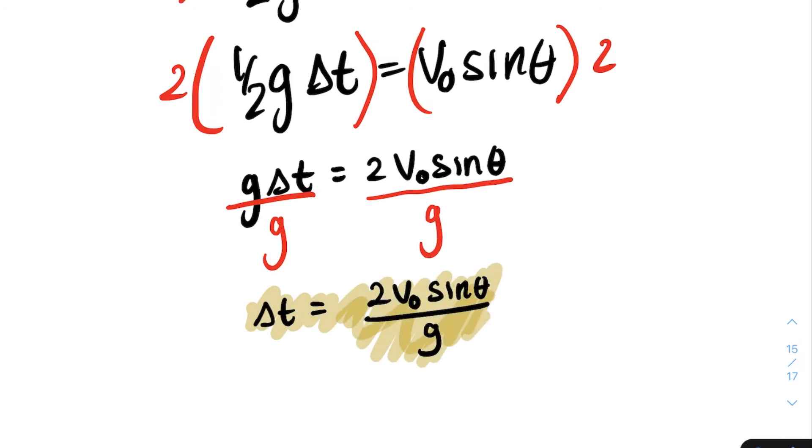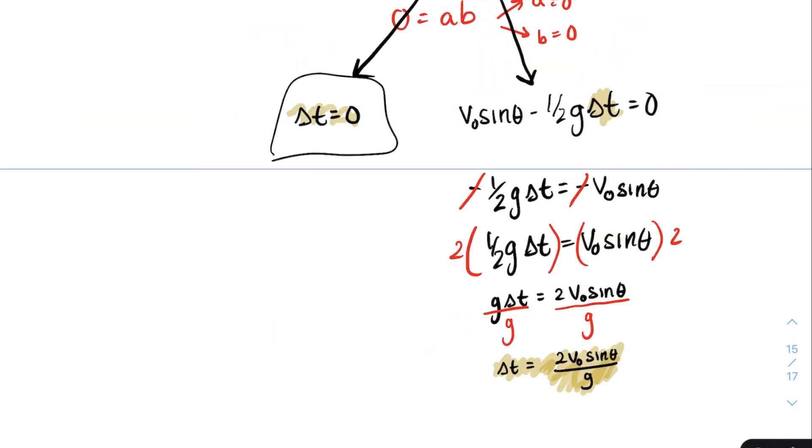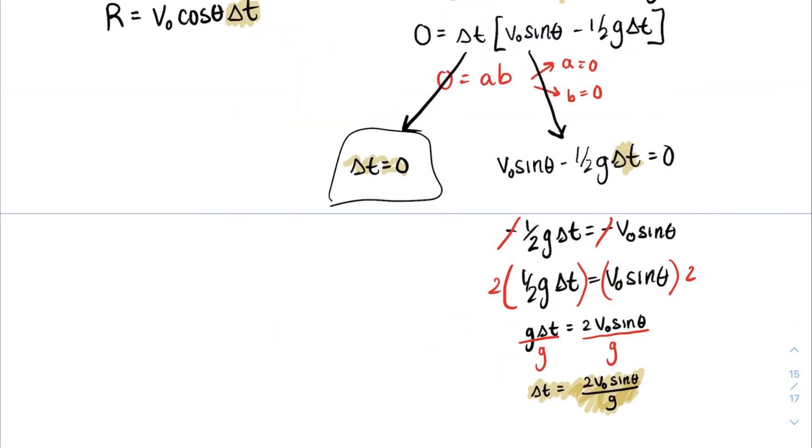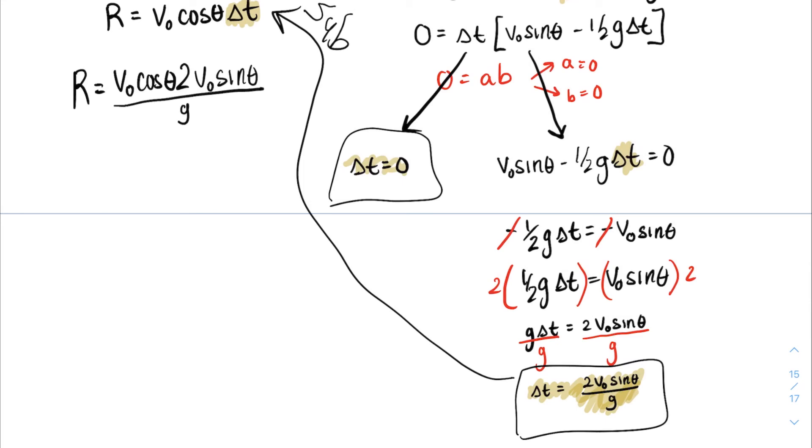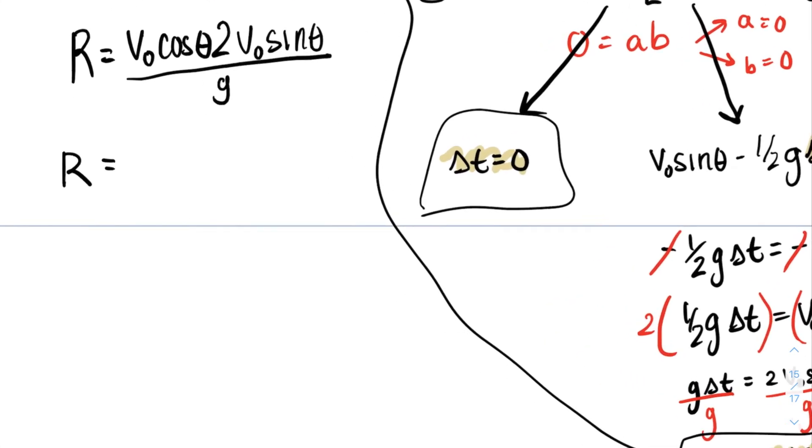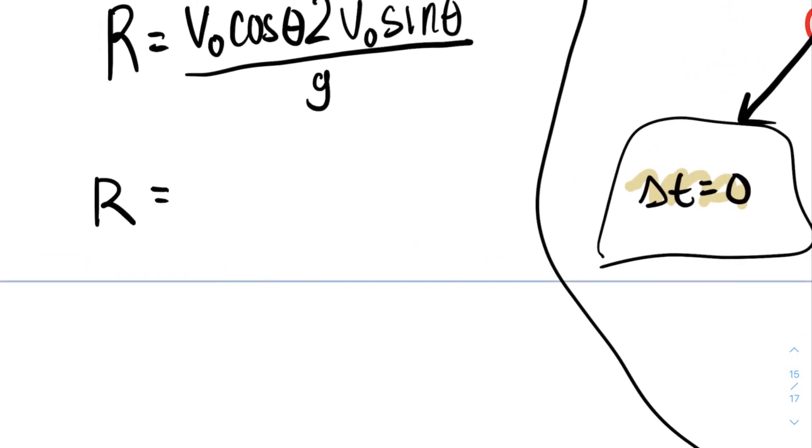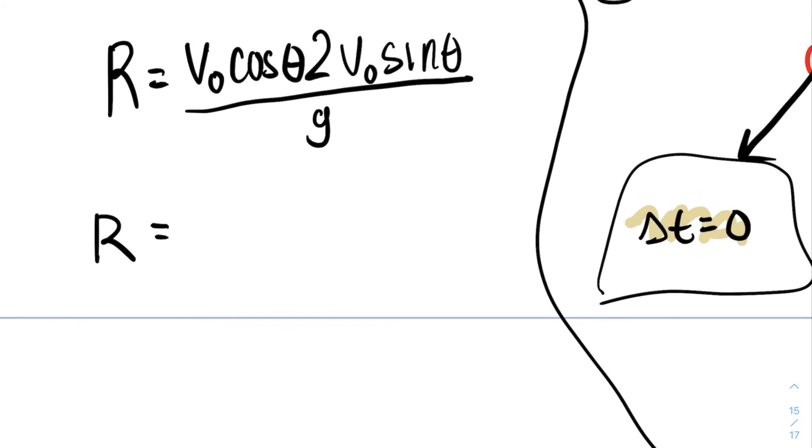So that's why we want an expression for the change in time. The next time that the displacement is zero is when it lands, which is our second possibility for the time interval. So what we're going to do, we're going to substitute in this expression that we found along into the x component. So we're going to do substitution. Okay, now we're almost there at our target of deriving the range formula, but let's just simplify this a bit.